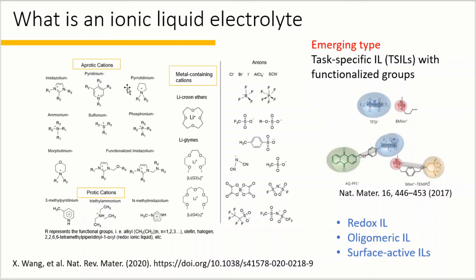Based on the composition of cations, ionic liquids are generally divided into three classes: aprotic, protic, and zwitterionic. Aprotic and protic ionic liquids share similar properties. The only difference is the presence of labile protons on the cation of protic ionic liquids. The cation of a metal-containing ionic liquid is composed of metal ion containing complexes such as lithium crown ester and lithium glymes. The development of new ionic liquids improves the charge storage capability by introducing, for example, redox reactions and influencing the ionic arrangement. This type of ionic liquid is called task-specific ionic liquid.